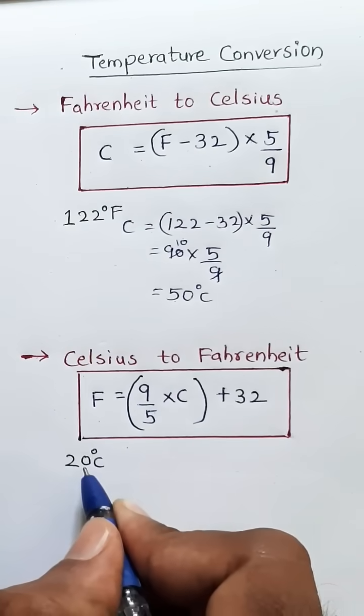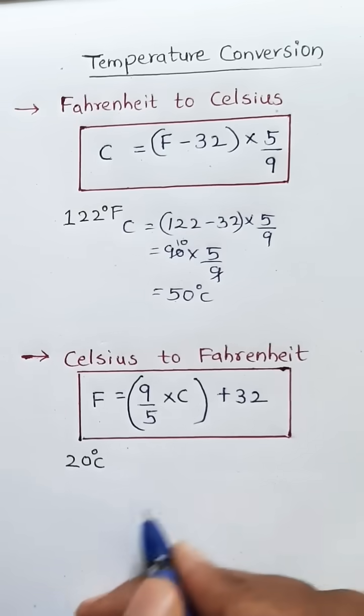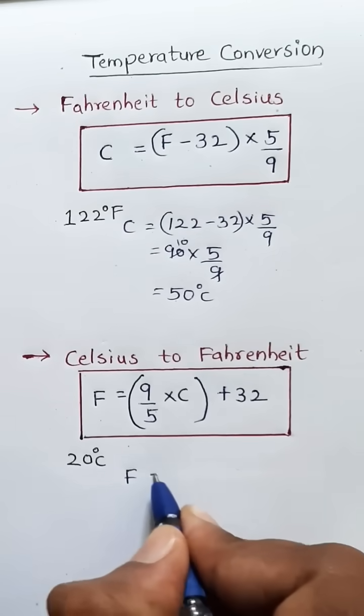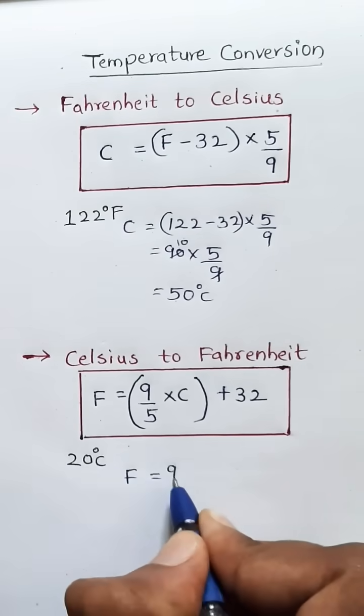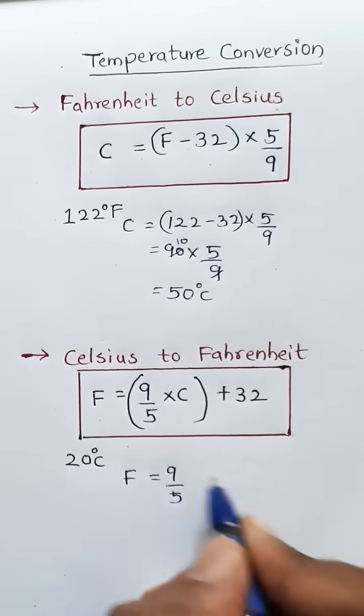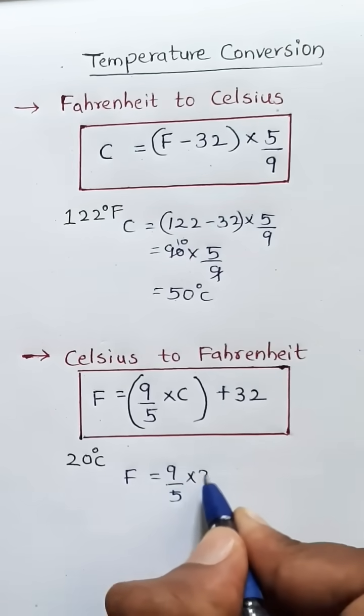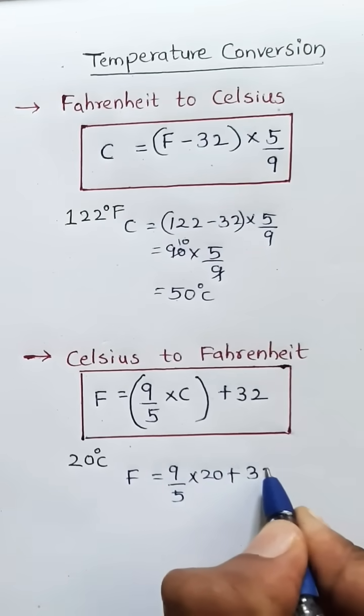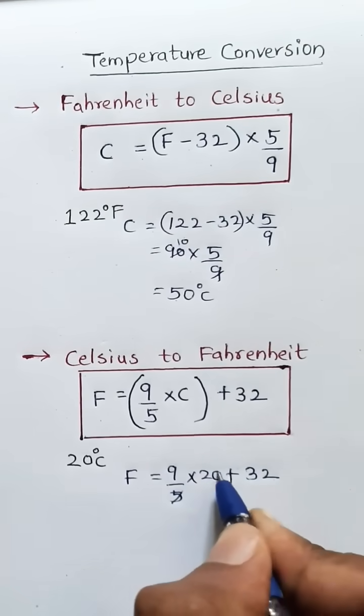The Celsius to Fahrenheit formula is F equal to 9 by 5 into C plus 32. Now we convert 20 degrees Celsius to Fahrenheit. F equals 9 by 5 into 20, in place of C we write 20, plus 32.